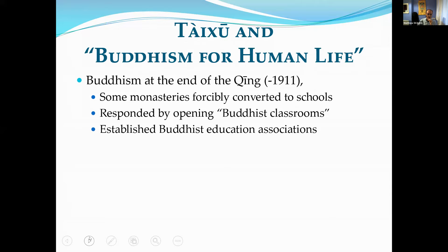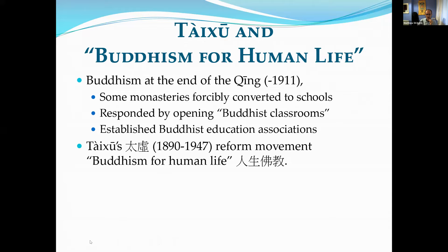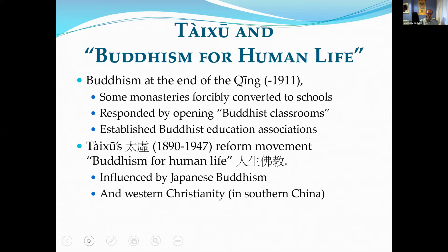One of the key figures in this process was Master Tai Xu, who called his overall reform movement 'Buddhism for Human Life' — Ren Sheng Fo Jiao. He was partly influenced by changes in Japanese Buddhism following the Meiji Restoration, and partly by Western Christianity, particularly as he saw in southern China how Christianity was propagated and teachings adapted. Tai Xu also read extensively about Western science and had traveled to the West, giving him a much broader view of what Buddhism should be doing to reform into the modern period.